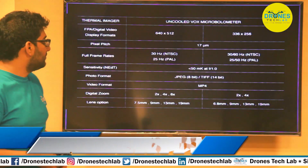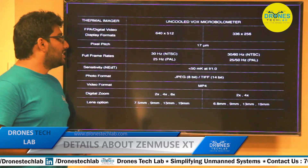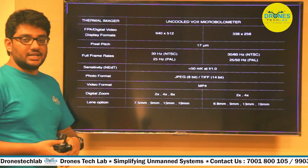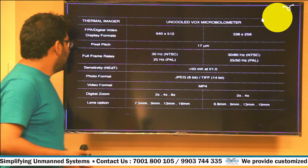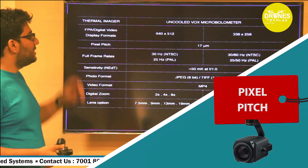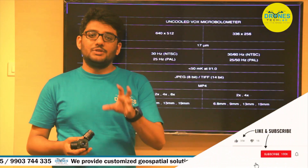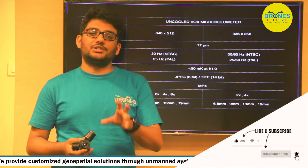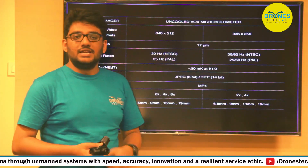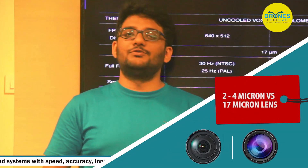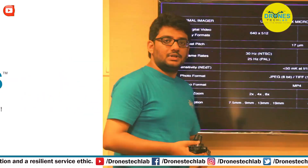Now let's discuss a few more intricate details about the Zenmuse XT thermal camera. It uses an uncooled VOx microbolometer as the thermal imager — a detector for thermal images originally developed for the US military. Regarding pixel pitch, which stands for sensor size: the larger the pixel, the better the light reception. Here the pixel size is 17 microns, compared to the typical 2–4 microns in standard cameras, demonstrating the high quality of this camera.